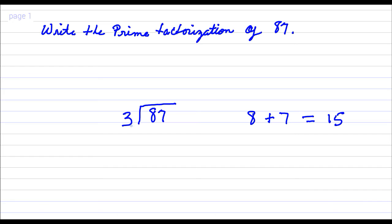So 87 divided by 3, that's 29, and 29 is a prime number, so you're done here. 87, written as a product of prime factors, is 3 times 29.